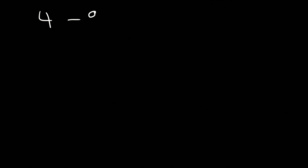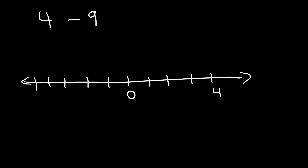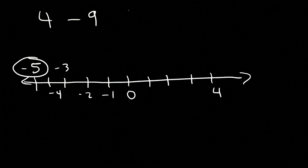Let's try 4 minus 9. Start with positive 4 and travel nine spaces to the left: 1, 2, 3 — passing through 0 — 4, 5, 6, 7, 8, 9. We end at negative 5. So 4 minus 9 is negative 5.